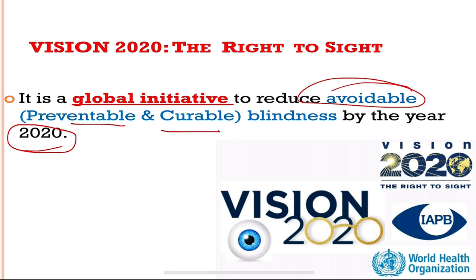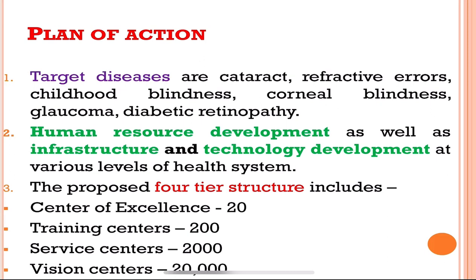The plan of action of the country includes target diseases: cataract, refractive errors, childhood blindness, corneal blindness, glaucoma, and diabetic retinopathy. The initiative aims to prevent and cure blindness caused by these diseases.